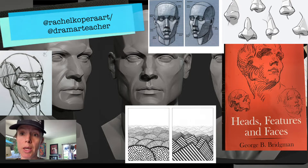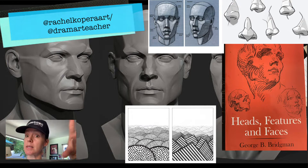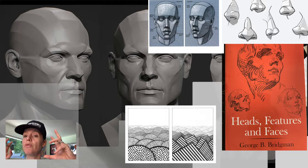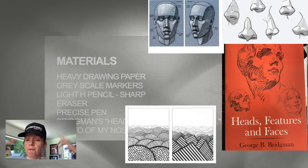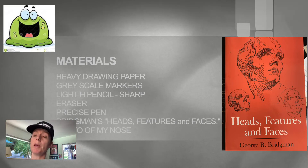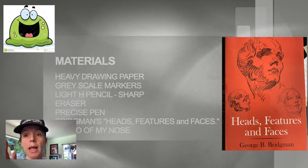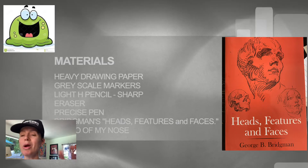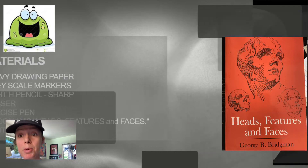It's Inktober and the prompt is boogers, so let's think about spatial depth — if something is closer to you it's going to be larger. For this week's assignment, draw a nose close, head far away. Your materials: heavy drawing paper, grayscale markers. Think about value — start with a light pencil, then jump to ink right away. Be bold with your marks. Use the eraser just for getting the angles right.